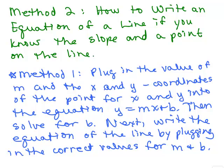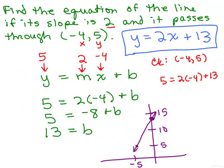Let's look at an example we did: find the equation of the line if its slope is 2 and it passes through negative 4, 5. We took y equals mx plus b, plugged in 5 for y, 2 for m, negative 4 for x, solved for b, and wrote the equation plugging in 2 for m and 13 for b. That is a method that will always work — you first solve for b and then go back and write the equation.